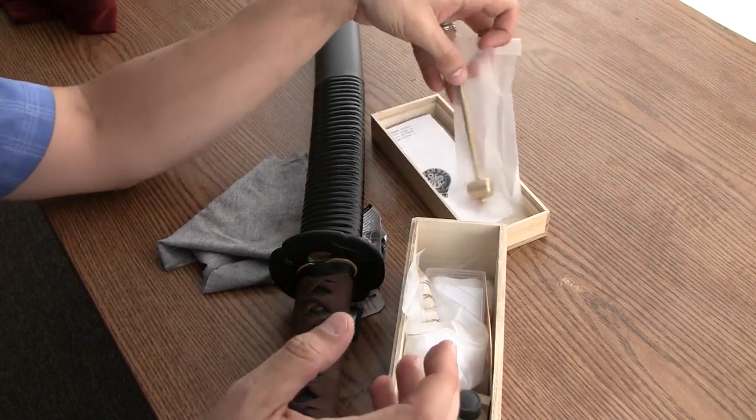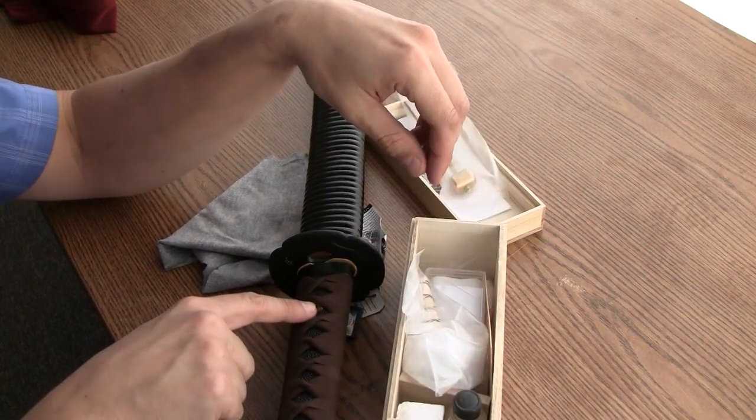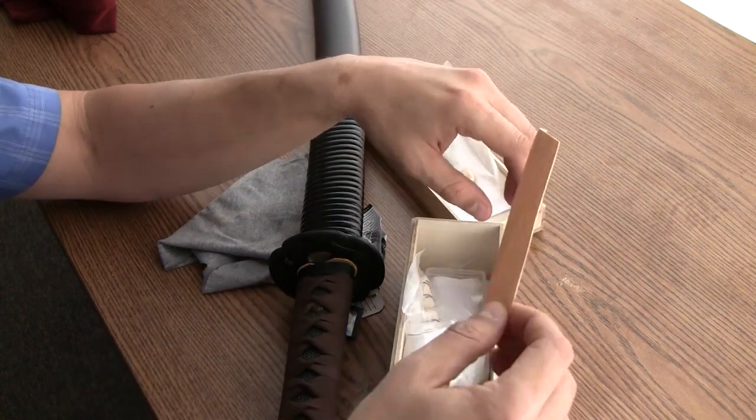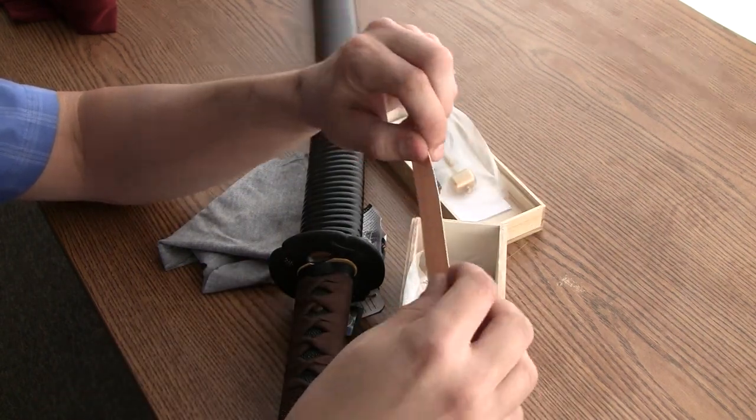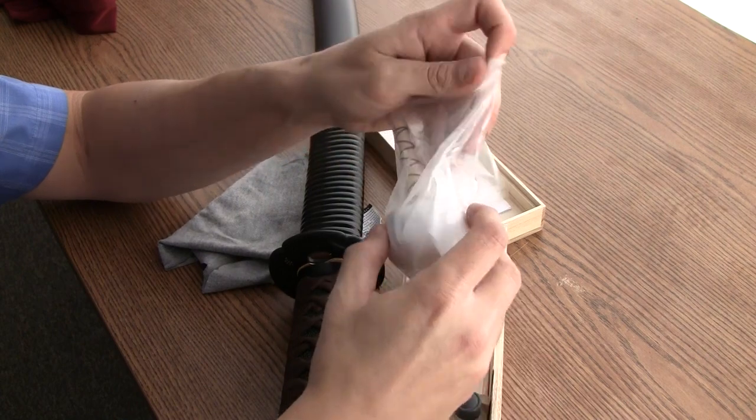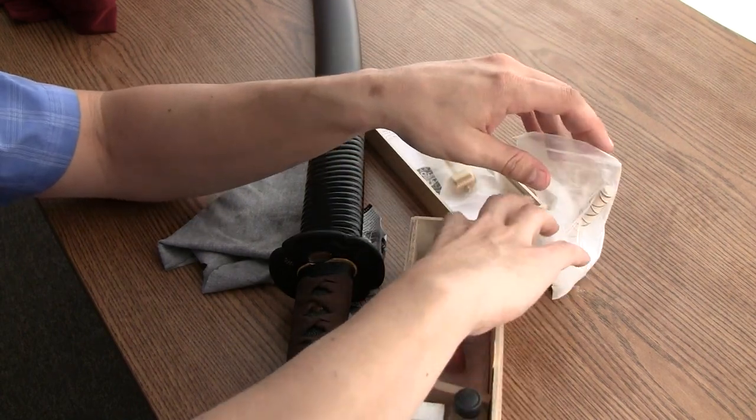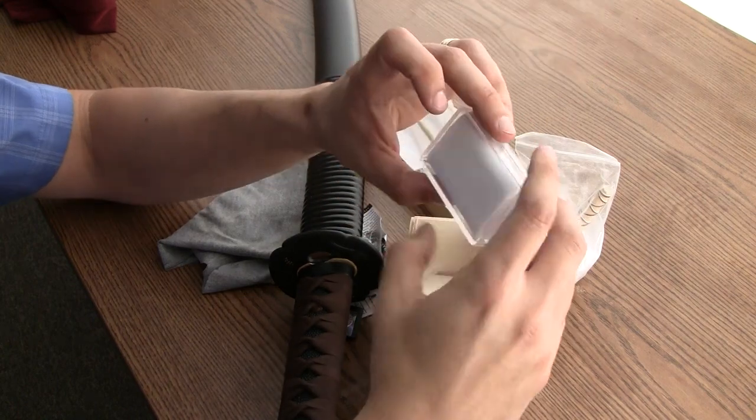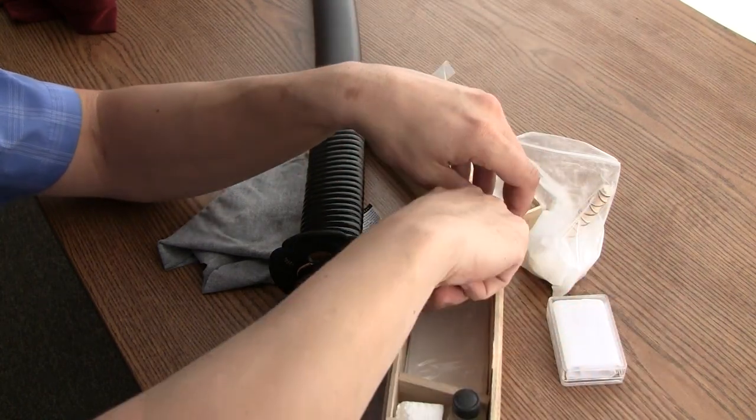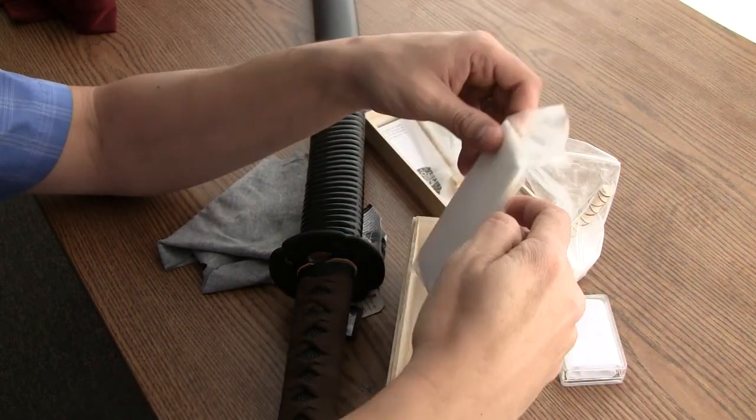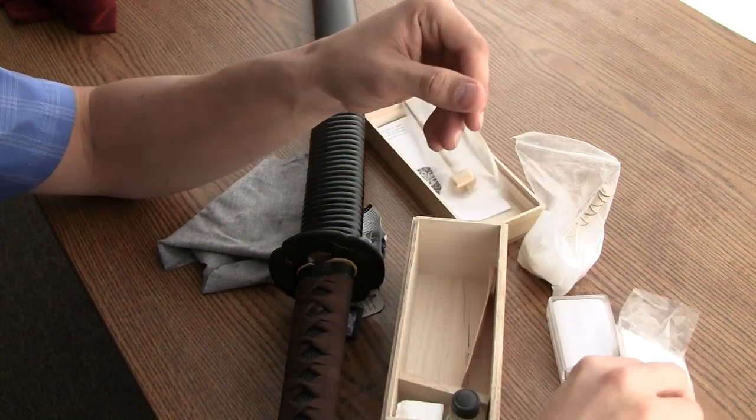You've got a little brass hammer for removing the mekugi or pins. Some wood for shimming. A ball of uchiko ball for cleaning. Along with some nice very soft cotton. Traditional rice paper for cleaning as well.